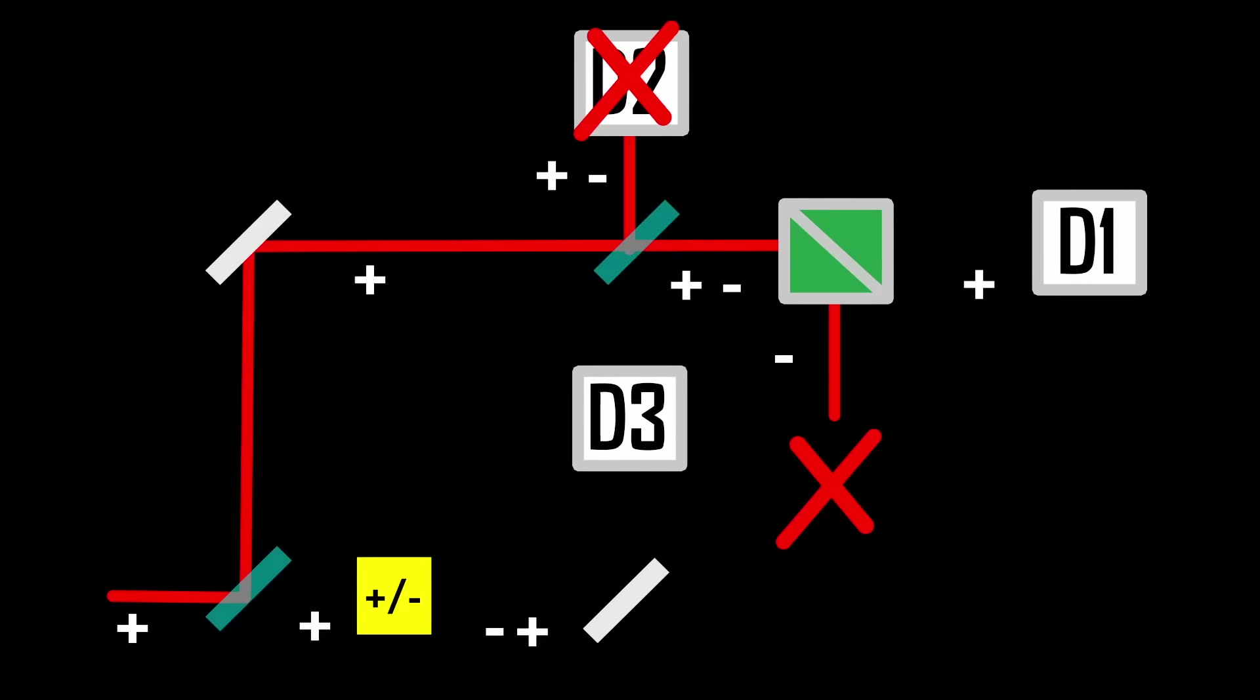You could also put a detector on the lower path, and if that doesn't click, you'd know that the photon was on the upper path. But then you could no longer do the weak measurement for the polarization.